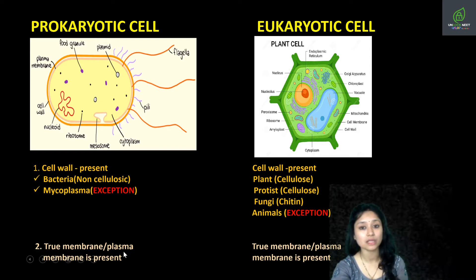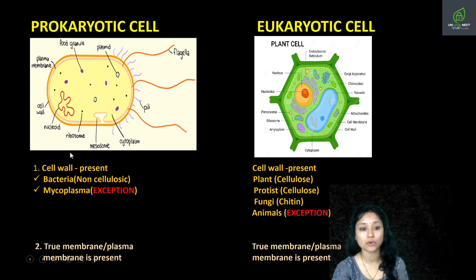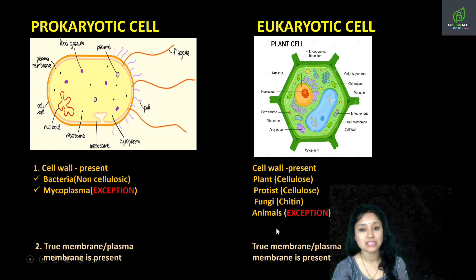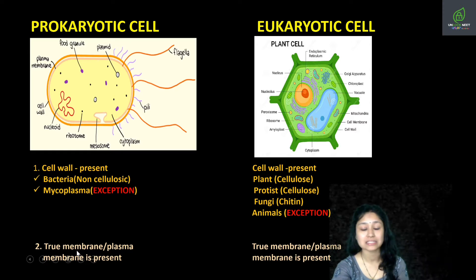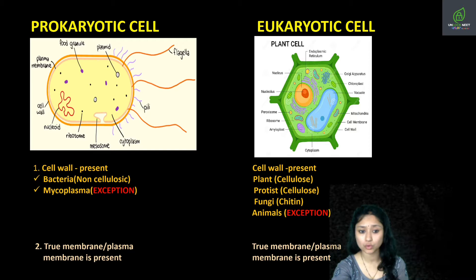The second difference is plasma membrane — the next layer after the cell wall. Plasma membrane is present both in prokaryotic cells as well as eukaryotic cells. Plasma membrane is also called true membrane, as it is composed of a lipid bilayer and protein. So both have true membrane present.